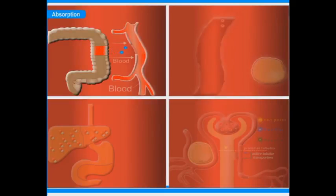The first process is absorption, which is defined as the transport of a drug from the site of administration to the systemic circulation.